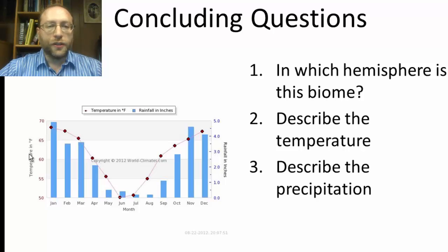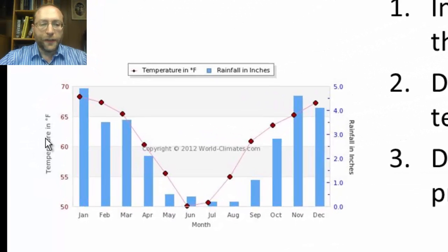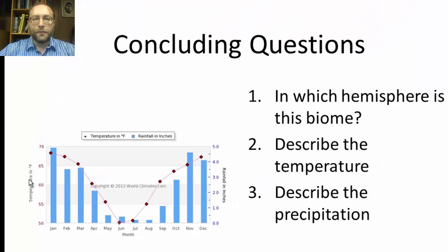Now we come to the concluding questions. We're looking at a climate graph, and the questions are: Number one, in which hemisphere is this biome? For that, you need to look at where winter and summer fall. Number two, describe the temperature over the course of the year. And number three, over the course of the year, what happens to the precipitation? I'm not asking you what biome this is, though I do expect you to be able to identify biomes on the test.